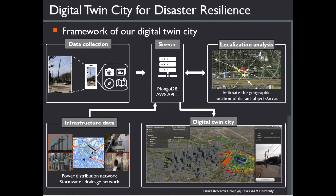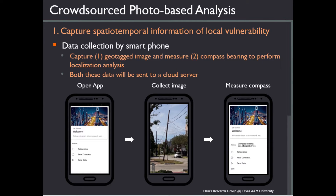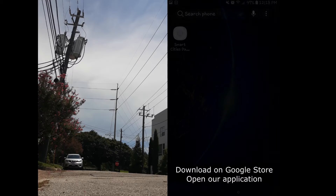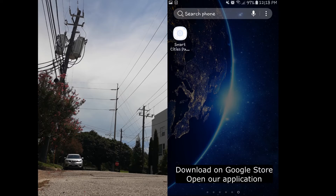Thus, we propose a new framework to bring crowdsourced visual data-based reality information into a virtual city model in order to create a digital twin city model. All data collected will be sent to the server, and localization analysis is performed on the server as well. Geotagged images and compass bearing data are captured by smartphone for performing localization analysis, and both these data will be sent to a cloud server.